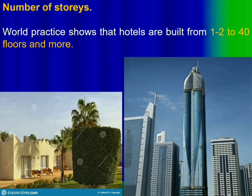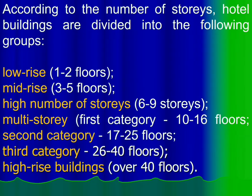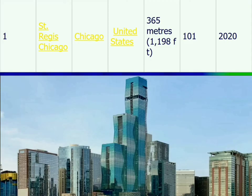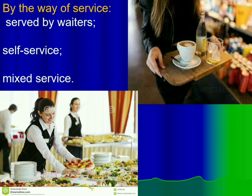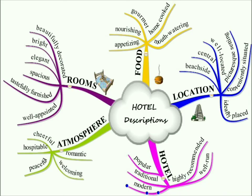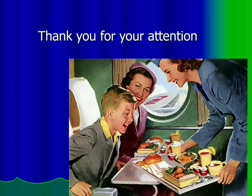When we speak about the number of storeys, hotels can be built from one or two storeys up to 40 floors and more — low-rise, mid-rise, or high-rise. On the screen you can see one of the highest hotels in the world, located in the United Arab Emirates, higher than 365 meters. Service can also vary — served by a waiter, self-service, or mixed service. You can evaluate hotels according to their food, location, atmosphere, and rooms. That was all we wanted to tell you about the assessment of food and hotel infrastructure. Thank you very much.